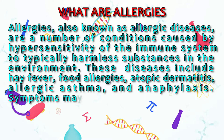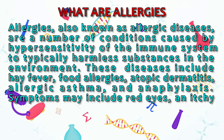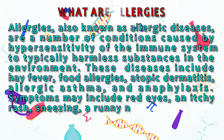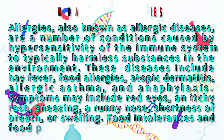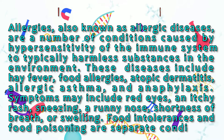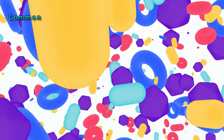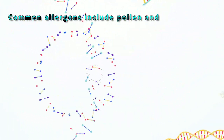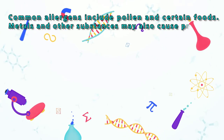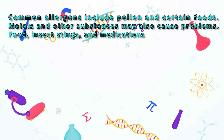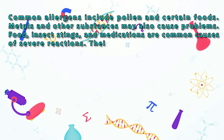Symptoms may include red eyes, an itchy rash, sneezing, a runny nose, shortness of breath, or swelling. Food intolerances and food poisoning are separate conditions. Common allergens include pollen and certain foods. Metals and other substances may also cause problems. Food, insect stings, and medications are common causes of severe reactions.